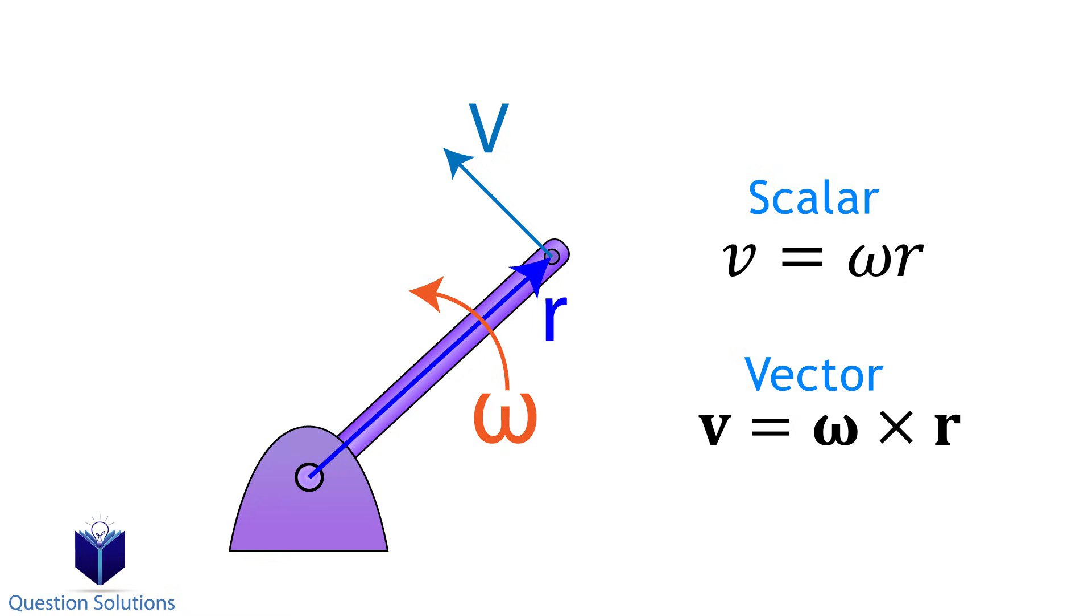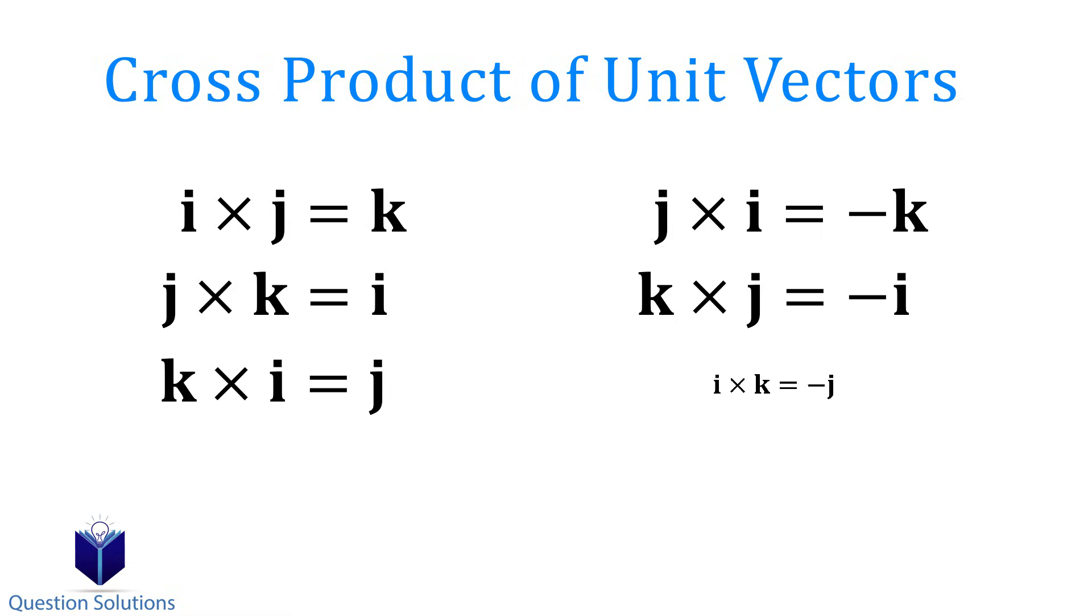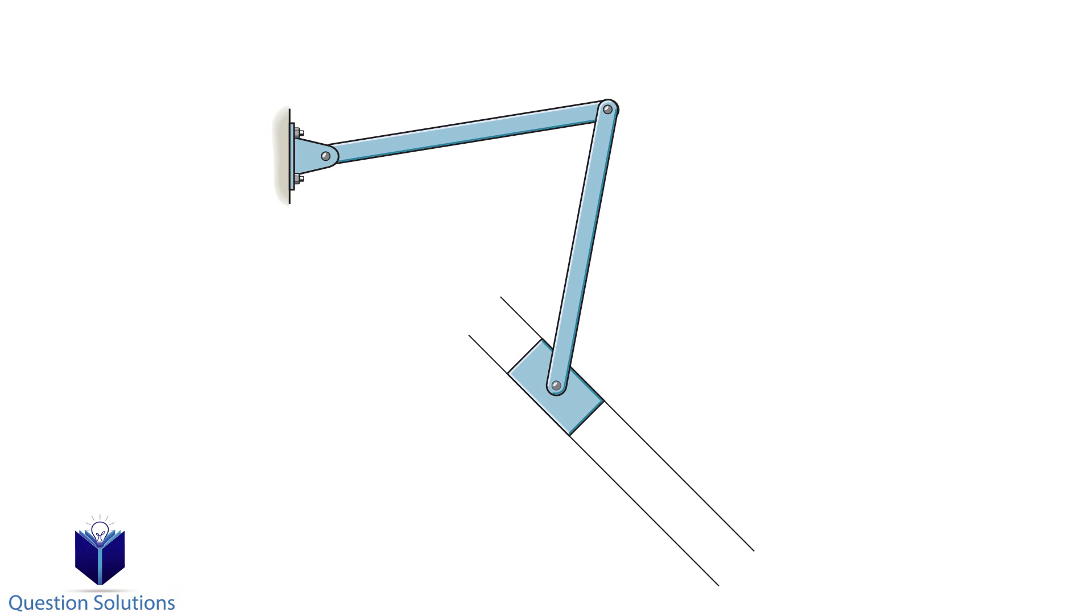You will also need to remember how to break vectors into components and how to do a cross-product. Also remember these, which shows what happens when you take the cross-product of unit vectors. So let's get started with some examples and see how we can apply what we learned.